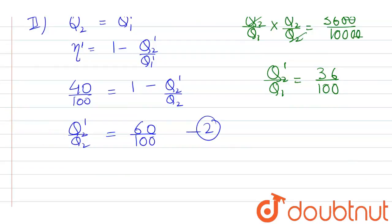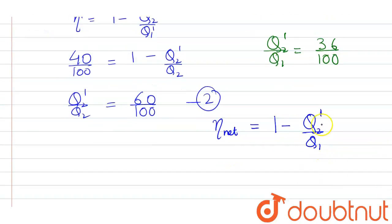Now we have to find the net efficiency, the overall efficiency. So the net efficiency will be 1 - Q₂'/Q₁, because Q₁ is the input and Q₂' is the last output. So we put the value of Q₂'/Q₁ here.